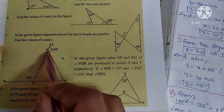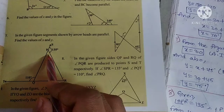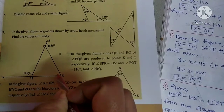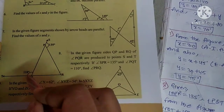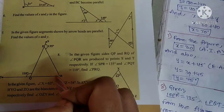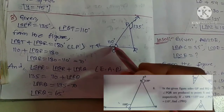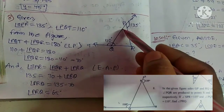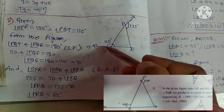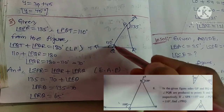We observe a linear pair of angles to find the interior angle at P. Using the linear pair, PQT plus PQR equals 180 degrees. So 110 plus PQR equals 180, giving PQR equals 70 degrees.